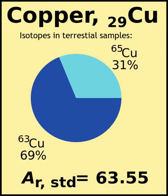For example, there is an uncertainty of only one part in 38 million for the relative atomic mass of fluorine, a precision which is greater than the current best value for the Avogadro constant. The calculation is exemplified for silicon, whose relative atomic mass is especially important in metrology. Silicon exists in nature as a mixture of three isotopes: 28Si, 29Si, and 30Si. The atomic masses of these nuclides are known to a precision of one part in 14 billion for 28Si and about one part in 1 billion for the others. However, the range of natural abundance for the isotopes is such that the standard abundance can only be given to about ±0.001%.